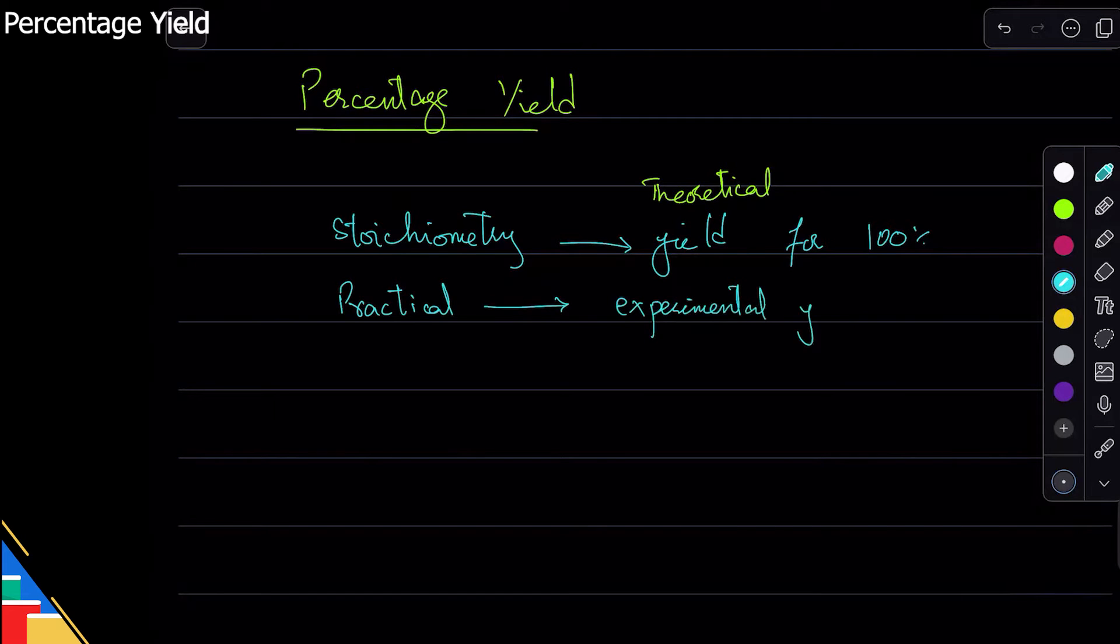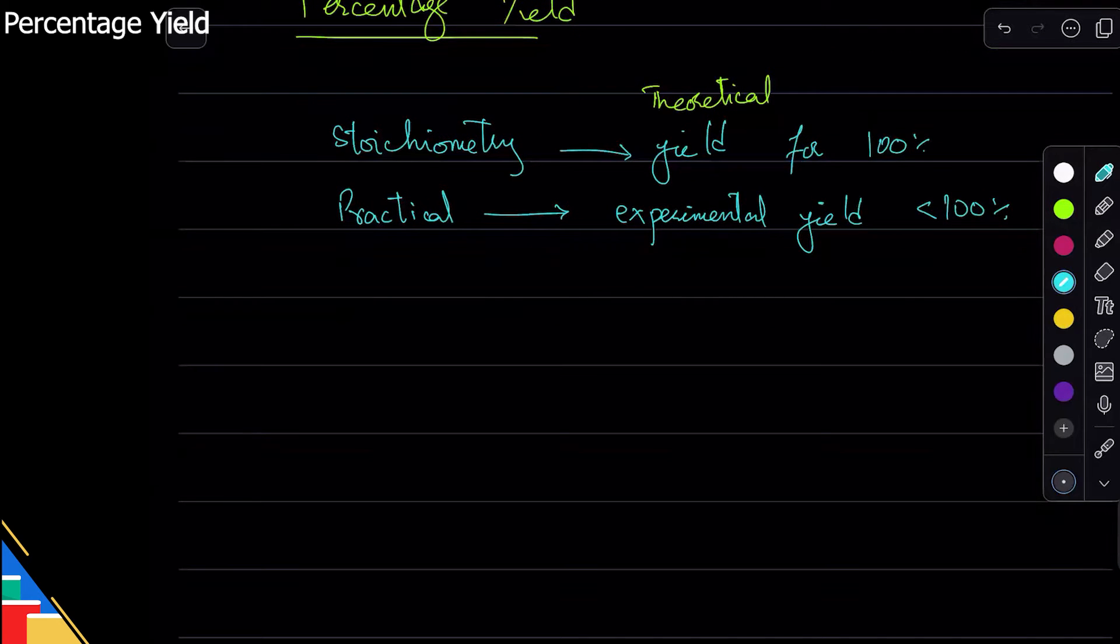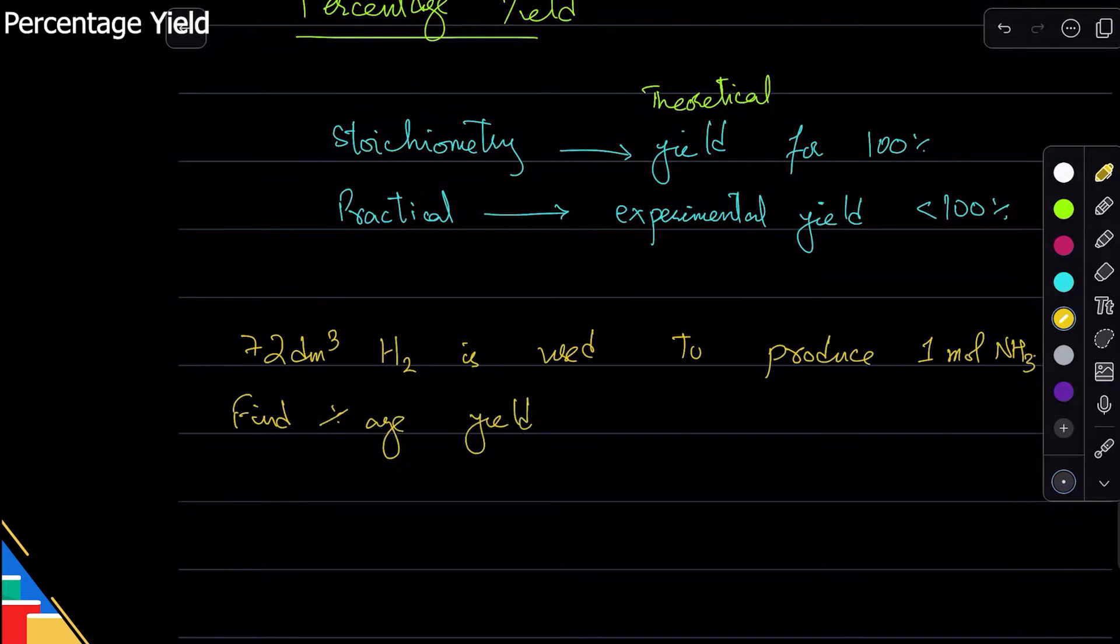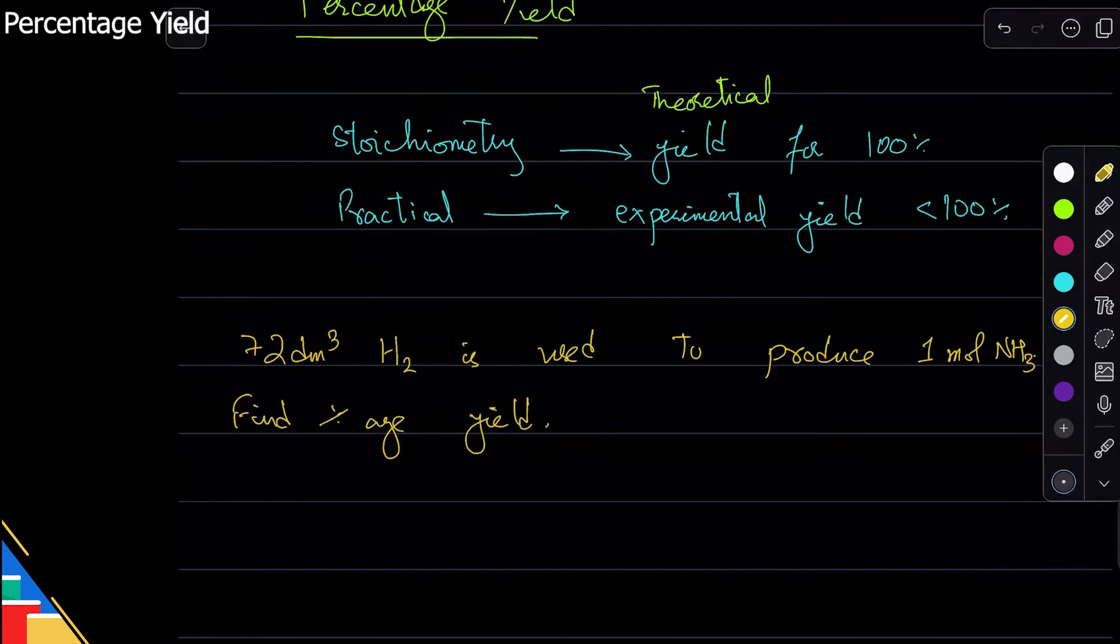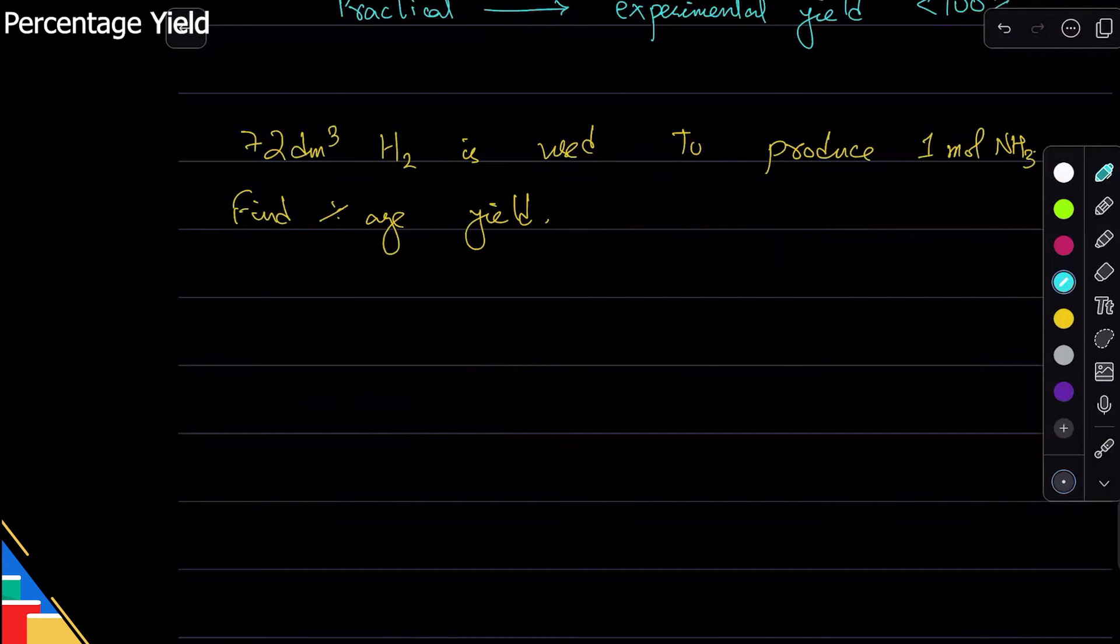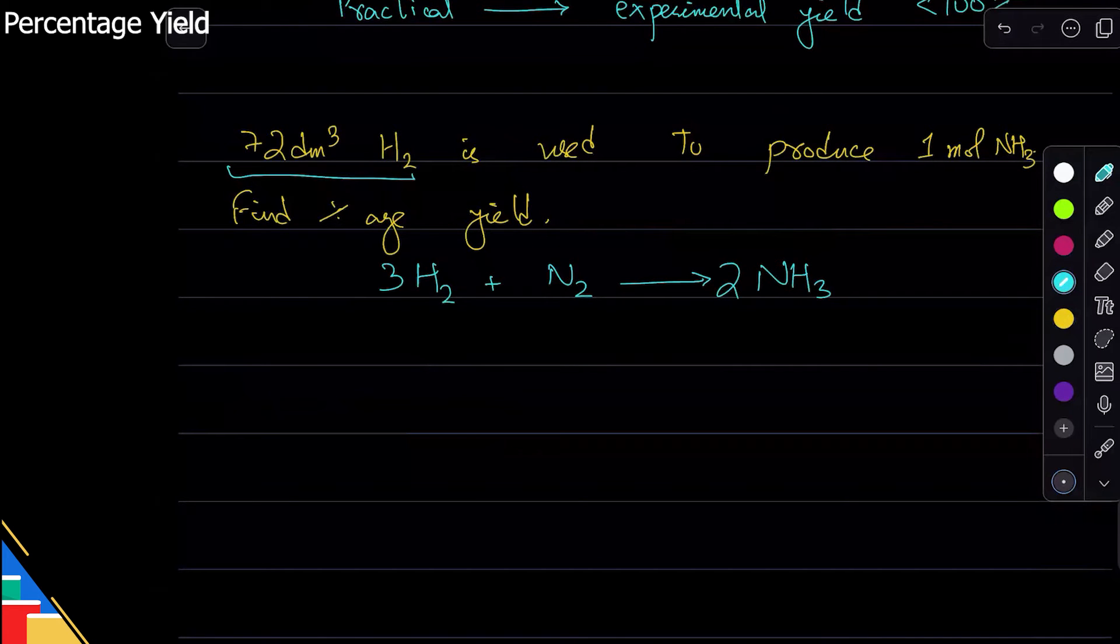I'll give an example. Let's say we have this question. First step is to figure out what the theoretical yield would be. So we do the stoichiometry as we normally would. We'll do the calculation: hydrogen plus nitrogen makes ammonia.